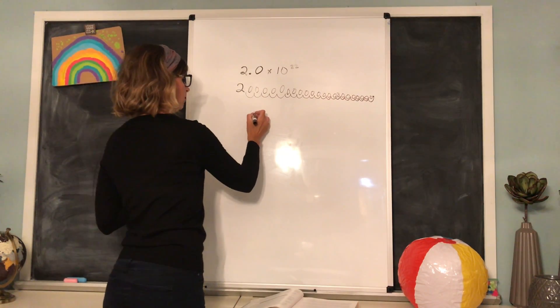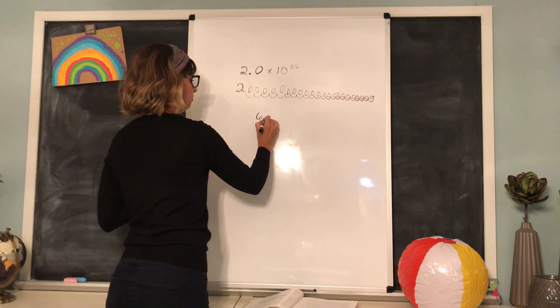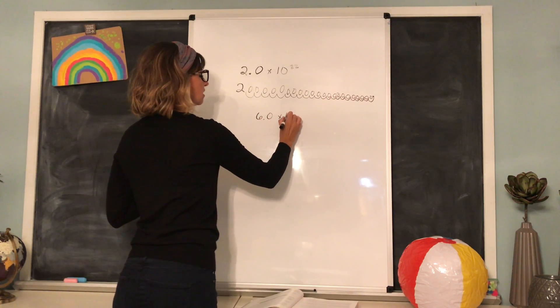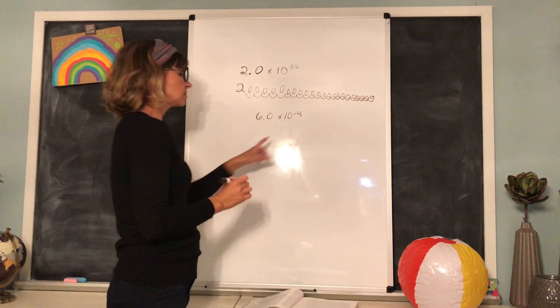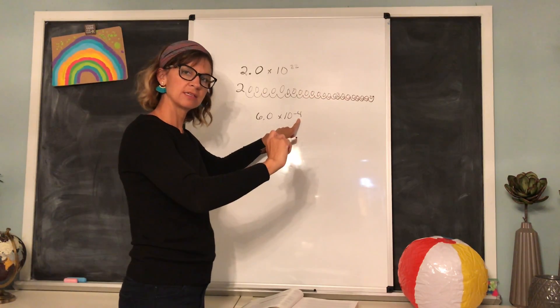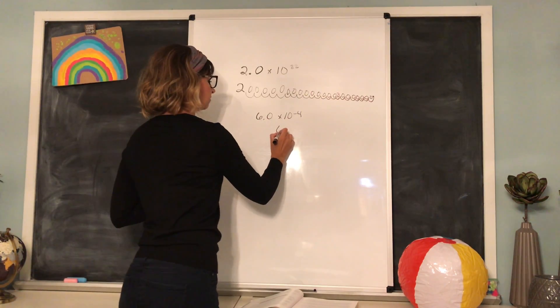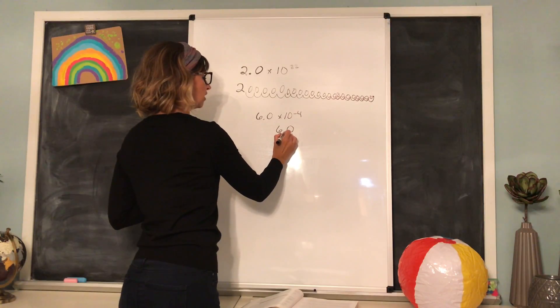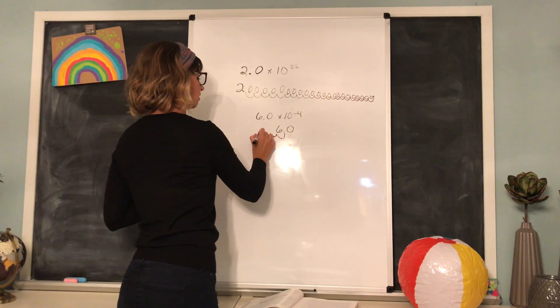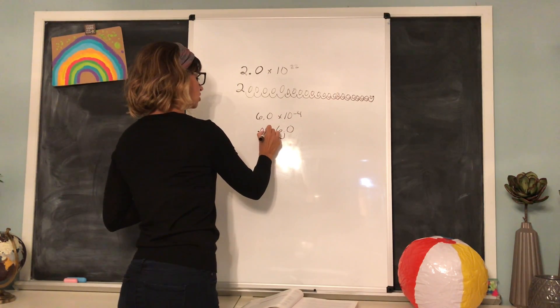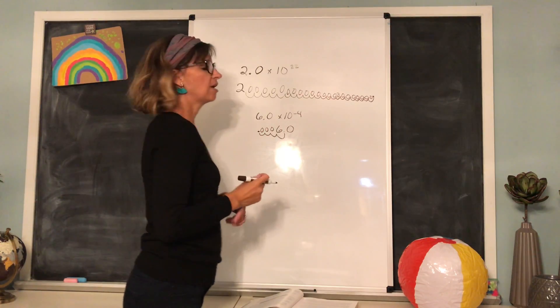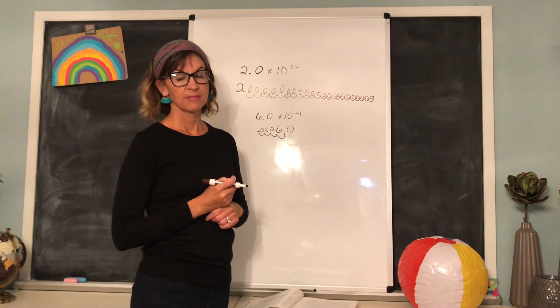We can also have it with a negative number like 6.0 times 10 to the negative 4th, which would mean instead of moving the decimal places 4 places to the right, because it's negative, we're moving it 1, 2, 3, 4 places to the left. So it would actually be 0.0006.